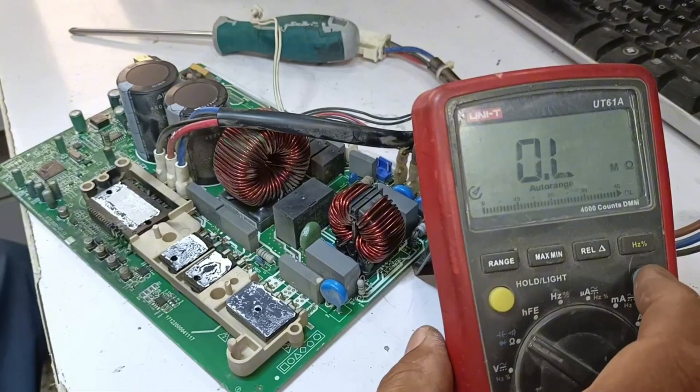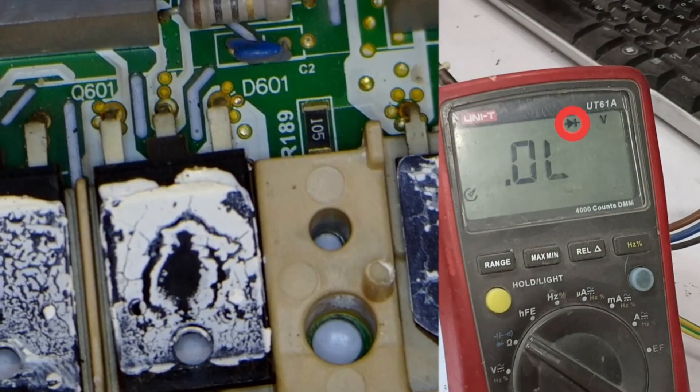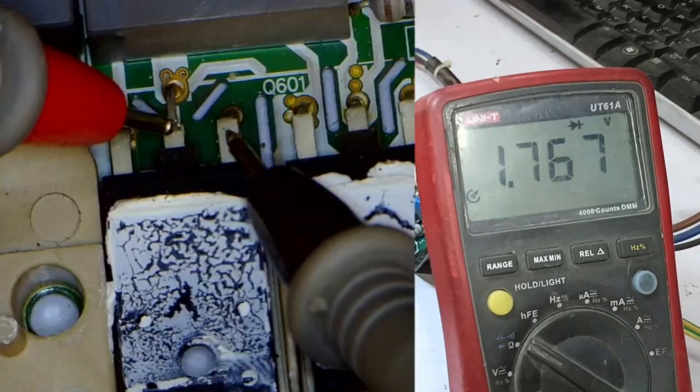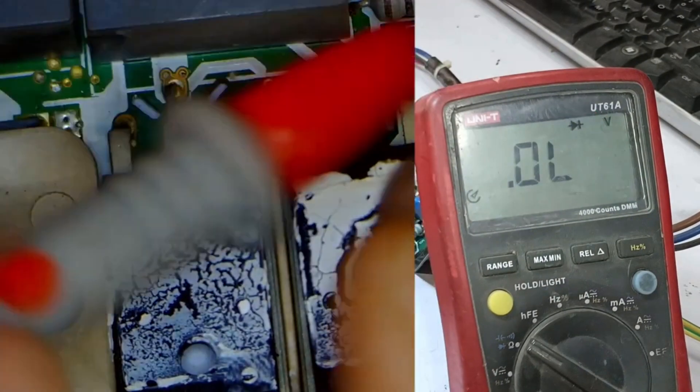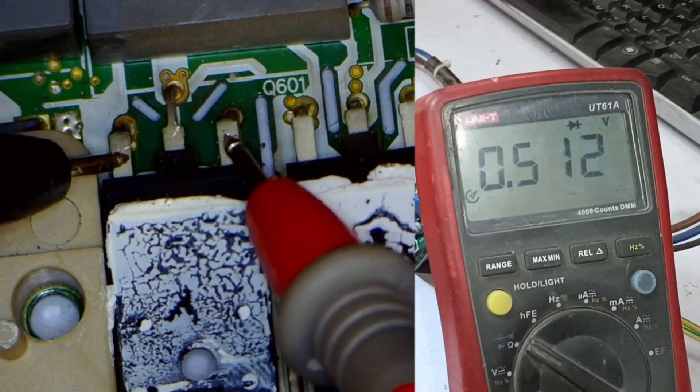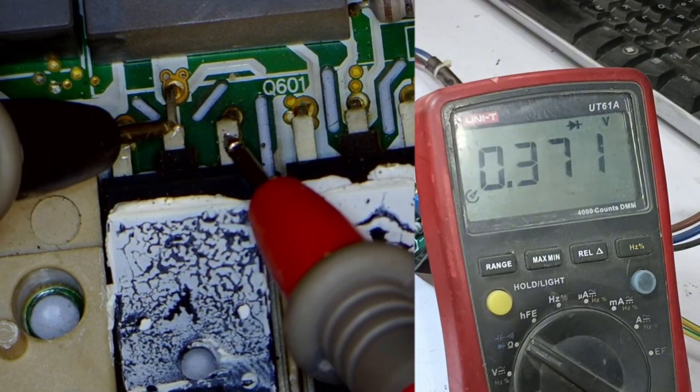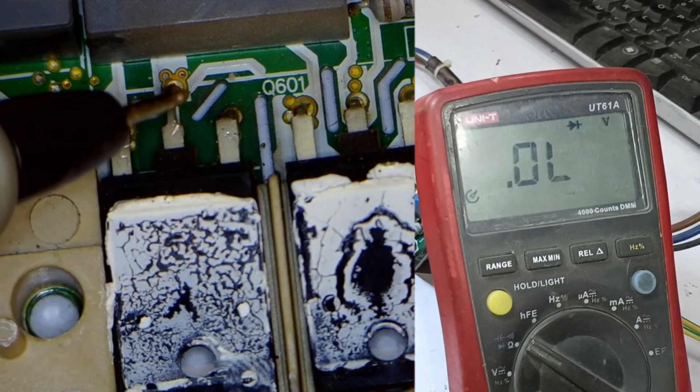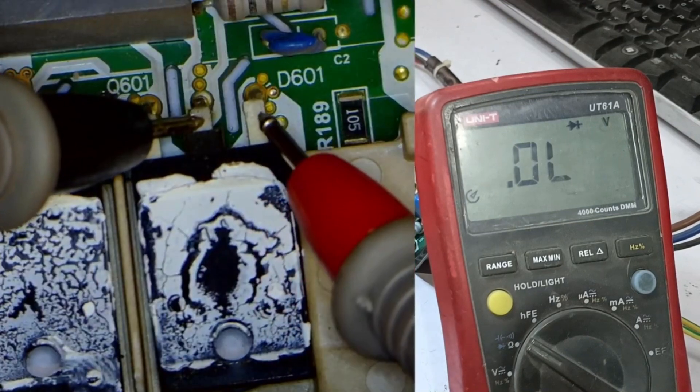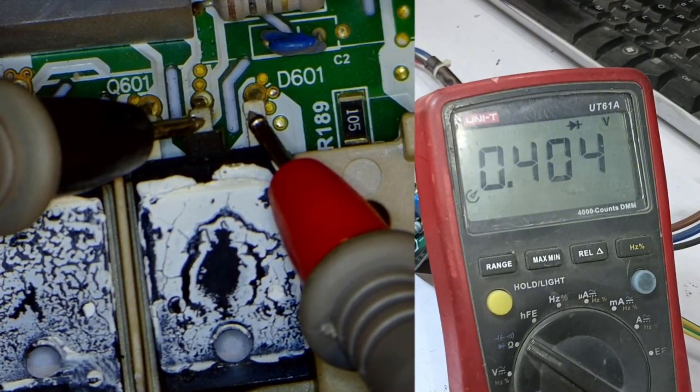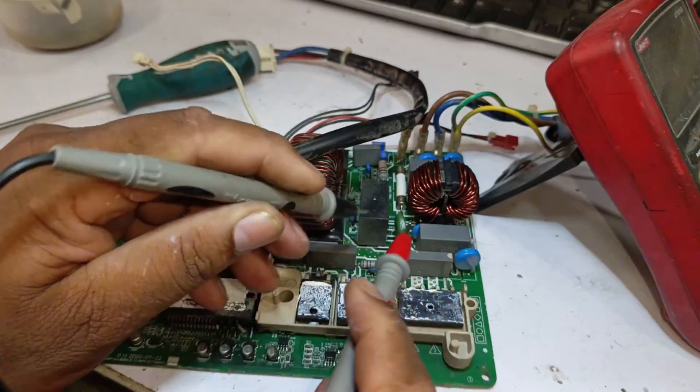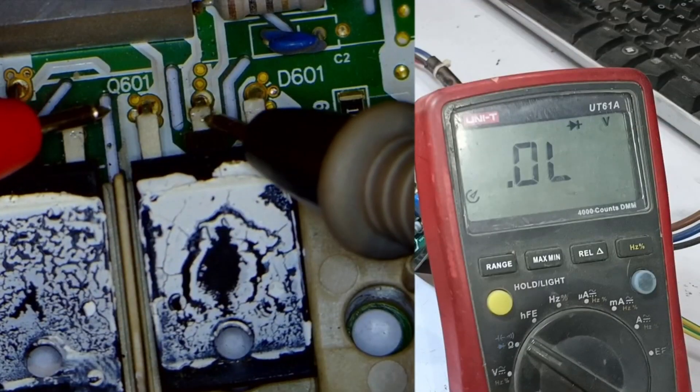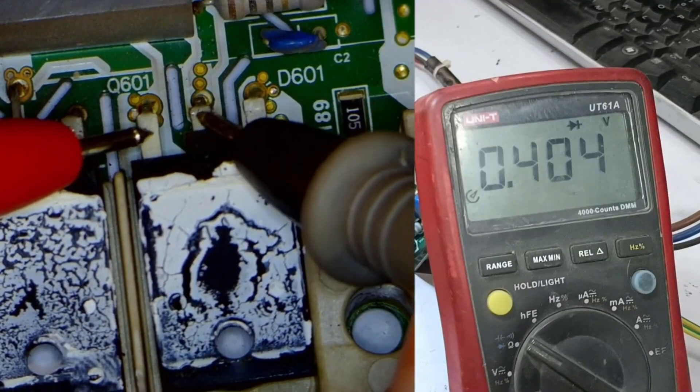We will set the multimeter to diode mode. You can see that D601 and Q601 are installed here. We should not get a reading of 0, and if we do, it means they are faulty. Right now, the voltage drop is showing, which means they are working fine. We will also check the diode attached here. This is the cathode, and this is the anode. It shows a voltage drop of 0.404. We'll check the other side by placing the pin in the center, and it's working fine.